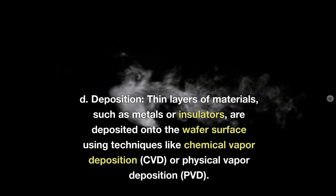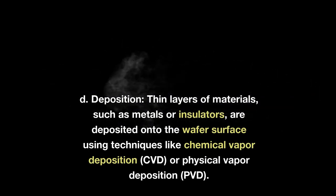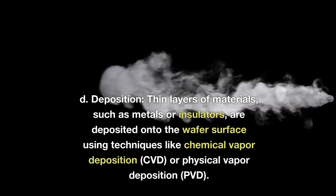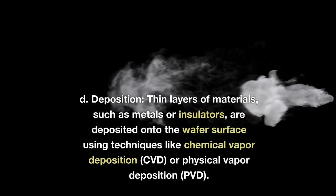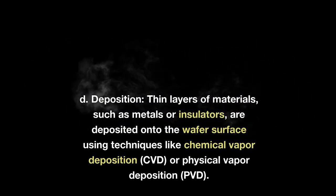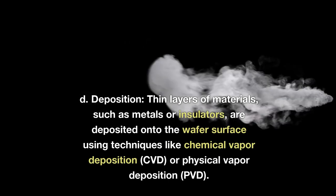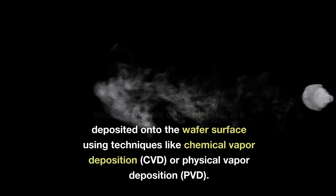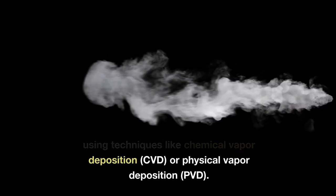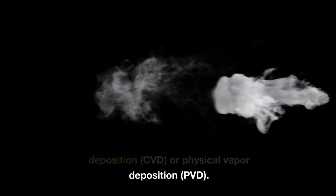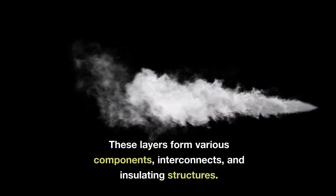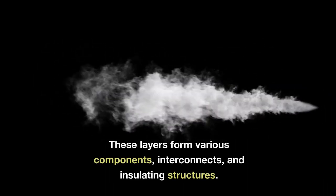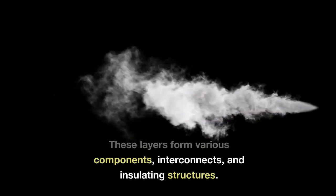D. Deposition. Thin layers of materials, such as metals or insulators, are deposited onto the wafer surface using techniques like chemical vapor deposition (CVD) or physical vapor deposition (PVD). These layers form various components, interconnects, and insulating structures.